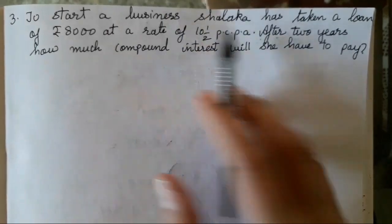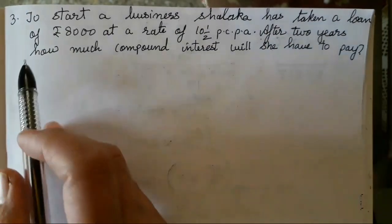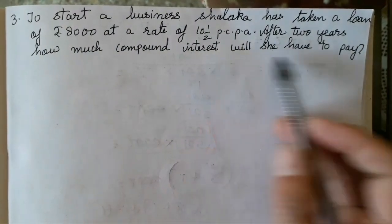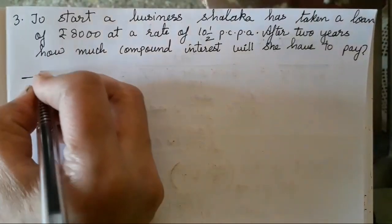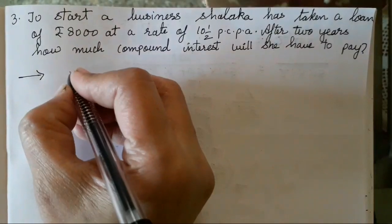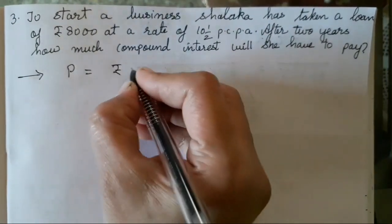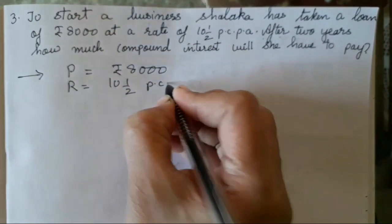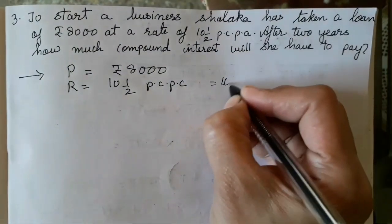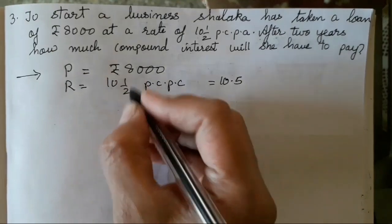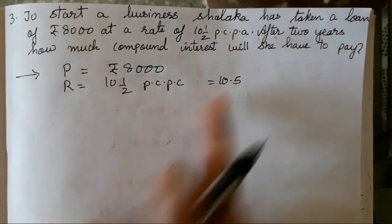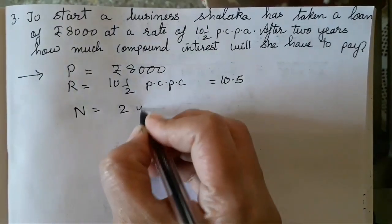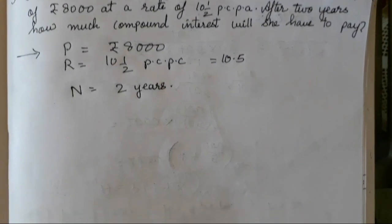To start a business, Shalaka had taken a loan of ₹8,000 at a rate of 10.5% per annum. After 2 years, how much compound interest will she have to pay? Compound interest means we have to use compound interest formula. First we will write what is P. You can write it in short form also. P is ₹8,000, R is 10.5 PCPA. 10.5 means we cannot use this fraction for finding the answer, so we will take 10.5 instead of half. And N is 2 years.